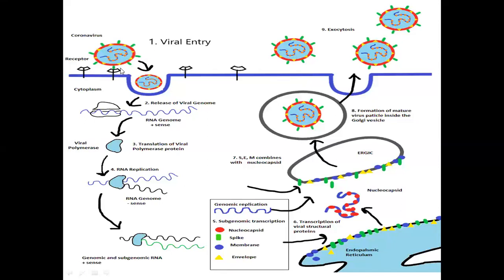Let us start with the first step: viral entry. The coronavirus first attaches or binds to the ACE2 receptor — the angiotensin-converting enzyme 2 receptor — which is present on the pneumocytes. When it binds to the ACE2 receptor, there is a conformational change in the S glycoprotein of the coronavirus. As a result, there is a cleavage and release of fragments of the S protein by the host transmembrane protease TMPRSS2.